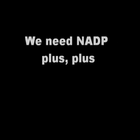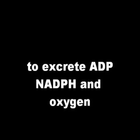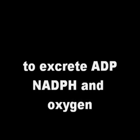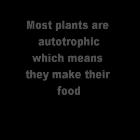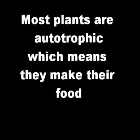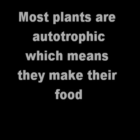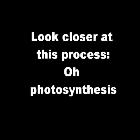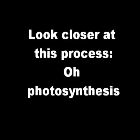Sugars, sugars are essential. Let's get some: 9H2O, ADP, we need NADP+. To produce ADP, NADPH, and oxygen. Most plants are autotrophic, which means they make their food. Look closer at this process — oh, photosynthesis.